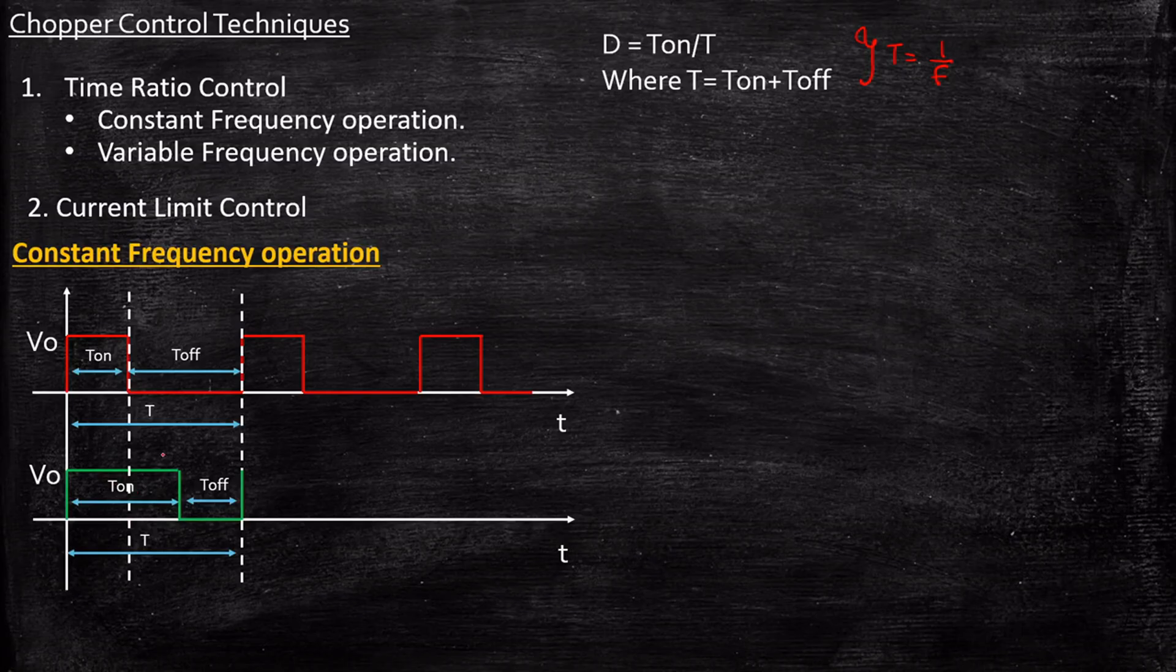That's why we are able to control the output voltage by controlling the frequency. In this case, we are keeping it constant, meaning we are only changing T_on. As a result, we are able to get a change in the output voltage and the cycle repeats.